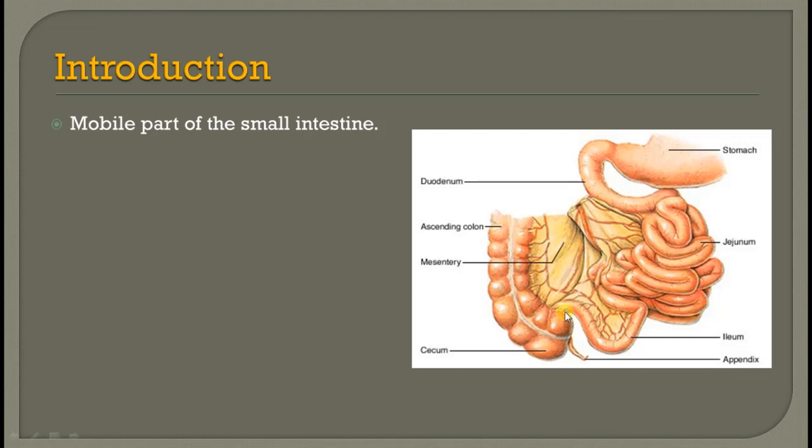It is the most mobile part. The coils of intestine are the most mobile part because they are freely suspended from the body wall by this large fan-shaped fold of peritoneum, which is called the mesentery. Because it is suspended by the peritoneum, it is also an intraperitoneal organ.